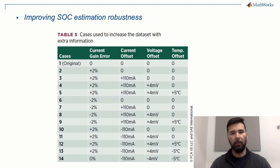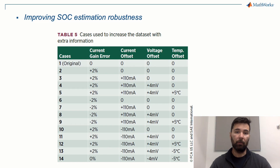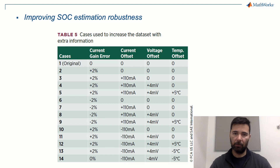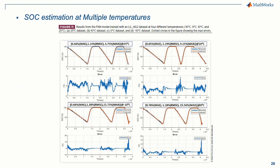In the case of SOC estimation for electrified vehicles, the sensors used to capture voltage, current, and temperature have significant error due to the low-cost sensor models typically used in the automotive industry. If the expected error is known during model design, the neural network training dataset can be augmented to include the error on the signal, improving the robustness of the resulting model. Table 5 shows the gain and offset values used to augment the dataset for each input feature. Figure 9 shows that despite the inclusion of noise in the test dataset across 14 cases from Table 4, the SOC estimation was maintained with similar accuracy throughout all cases.